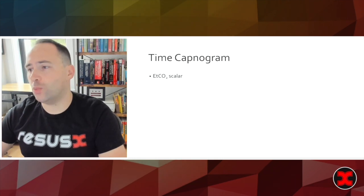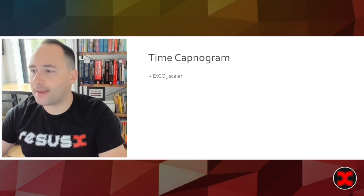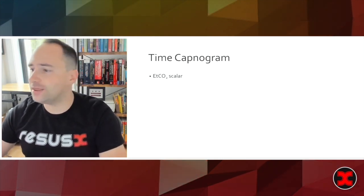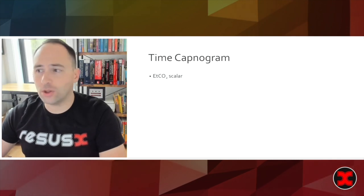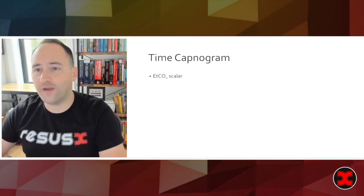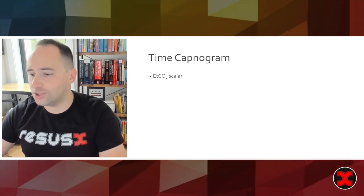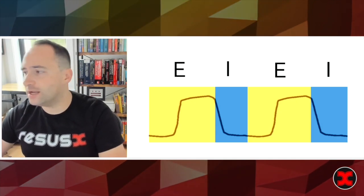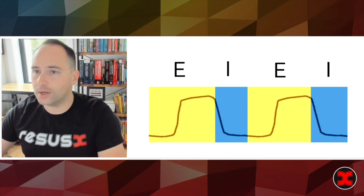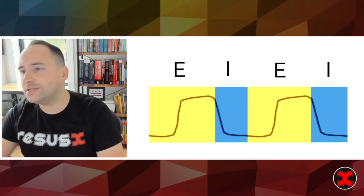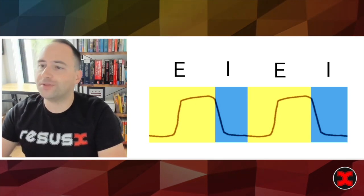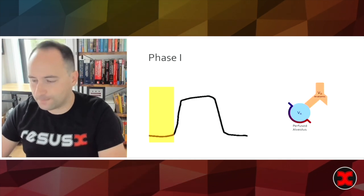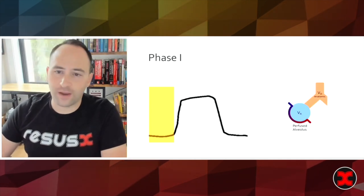So this is what we are going to see, a time capnogram. A scalar is anything that varies with time and what we are looking at is how your end tidal will vary with the passage of time. And so this is what your end tidal looks like and is potentially a little bit counterintuitive because the part that increases is the exhalation portion, the part that decreases is the inhalation portion. So let's go through these phase by phase.